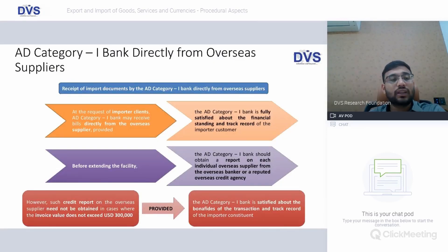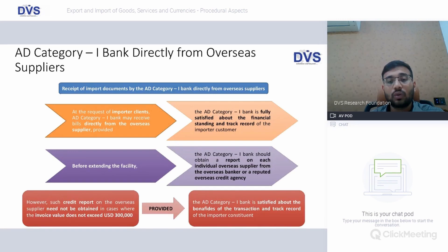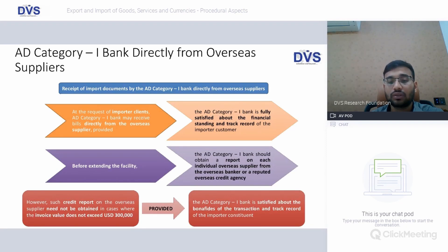AD Category bank may act as a representative for importers to receive import documents directly from overseas suppliers at the request of importer clients, but the AD bank must be fully satisfied about the financial standing and track record of the importer. They should also obtain a credit report on each individual overseas supplier from the overseas banker or a reputed overseas credit rating agency. However, such credit report need not be obtained where the value does not exceed USD 3 lakh, provided the AD bank is satisfied with the bona fides of the transaction and track record of the importer.